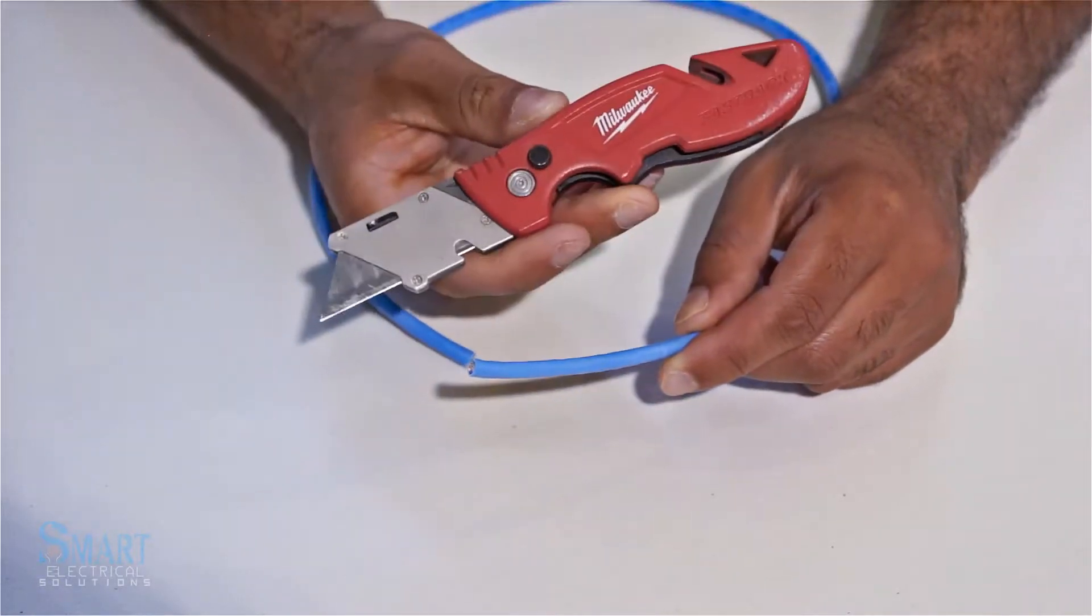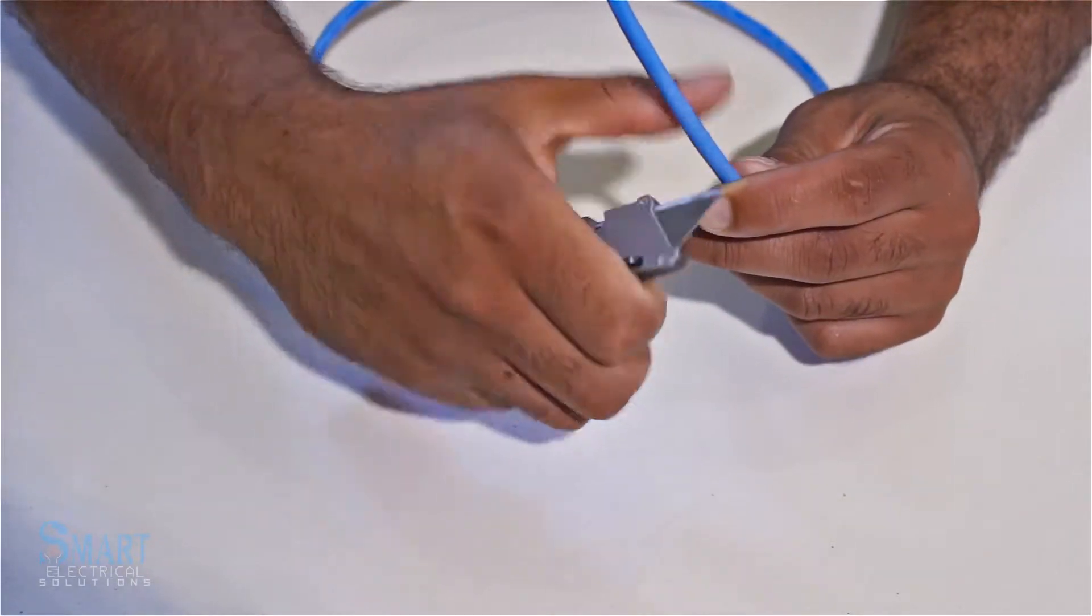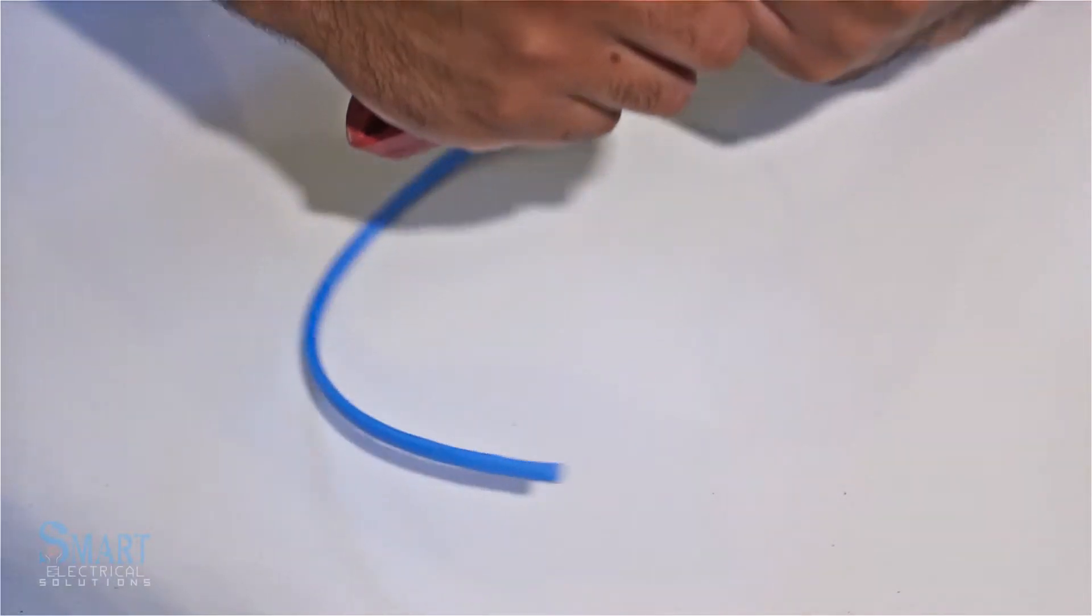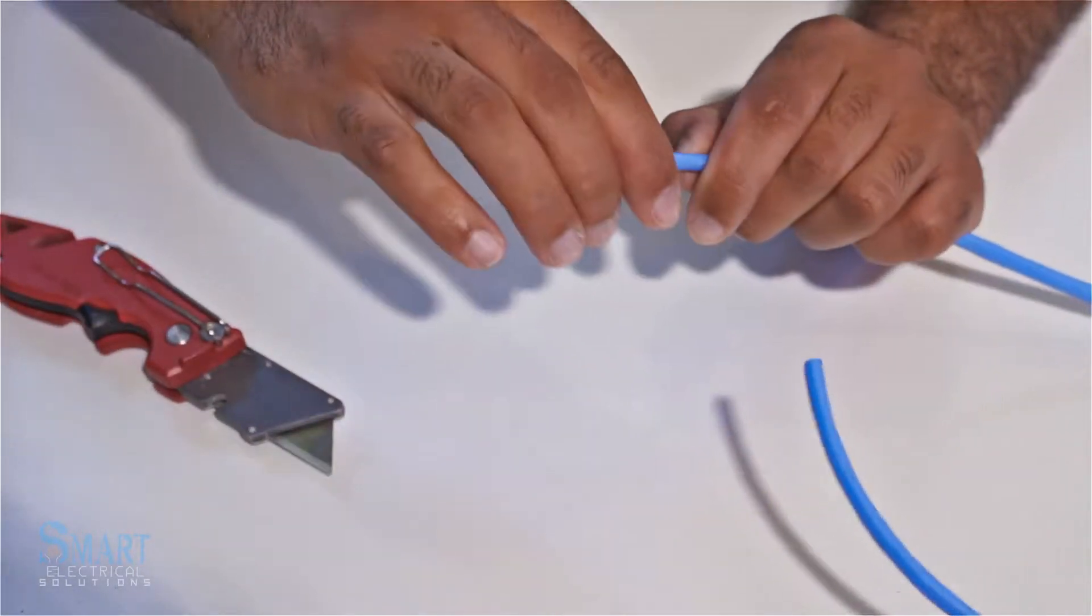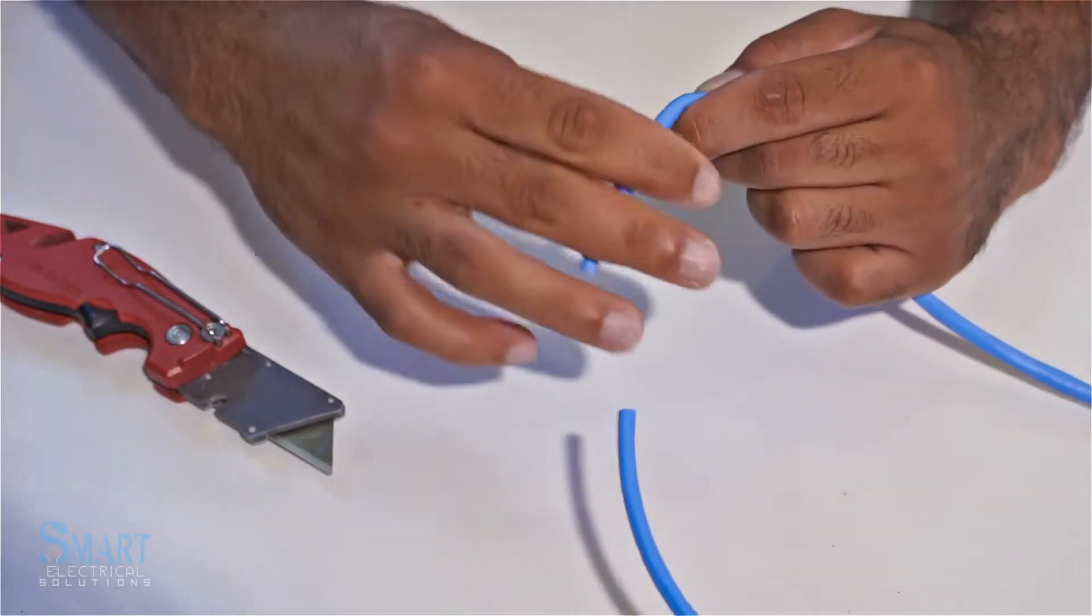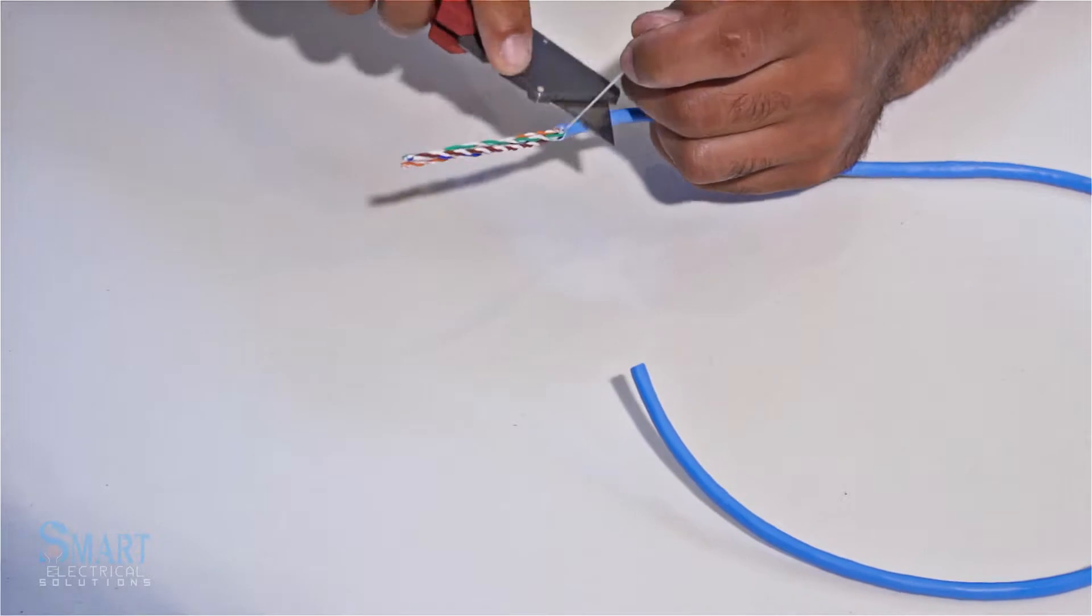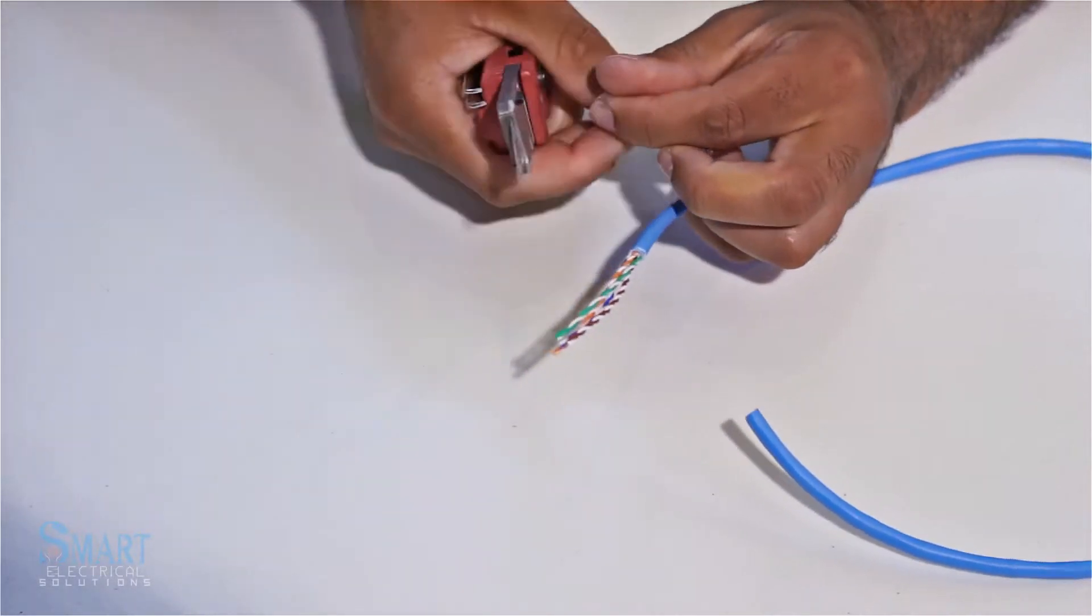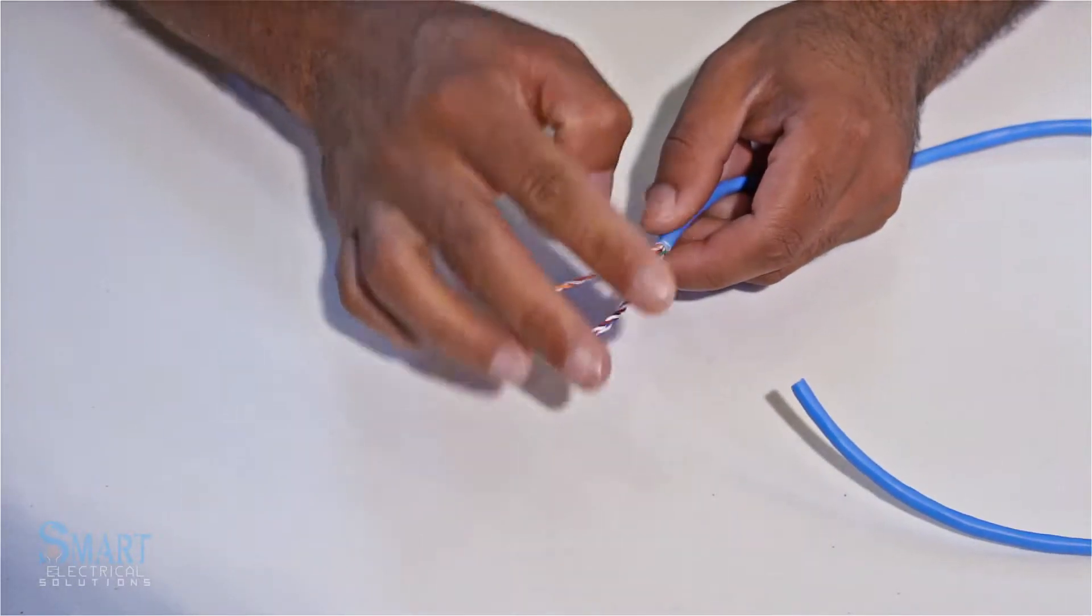The other option is to use a regular razor knife. You do the same thing, just be more careful. Place the knife and spin it around the cable a few times. Once you do that, just break the cable and cut this off. Be careful not to cut the wires. You're going to see four pairs of wires: blue, orange, green, and brown. We want to separate all these wires.